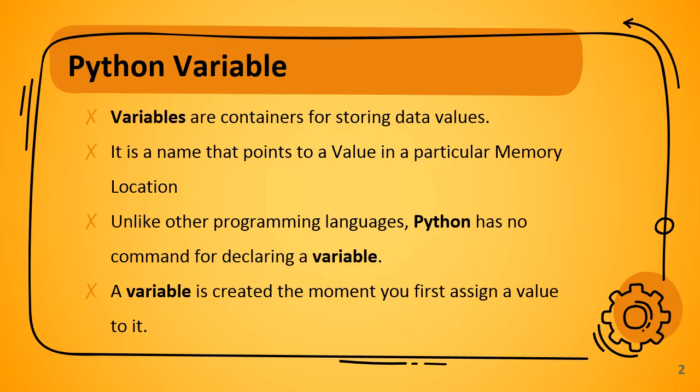Once the variable is created — that is, at the moment you first assign a value to it — for example, a = 10, you assign to the variable a value. At that moment the variable is created in memory. The variable name 'a' points to the memory location where the value 10 is stored.